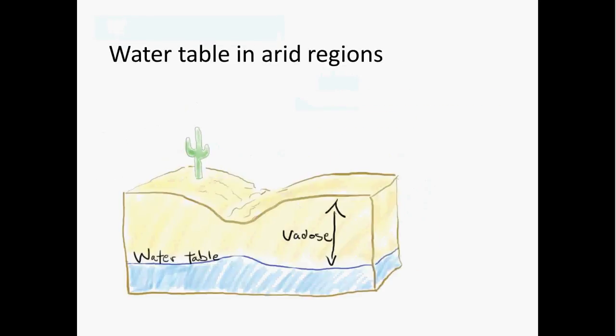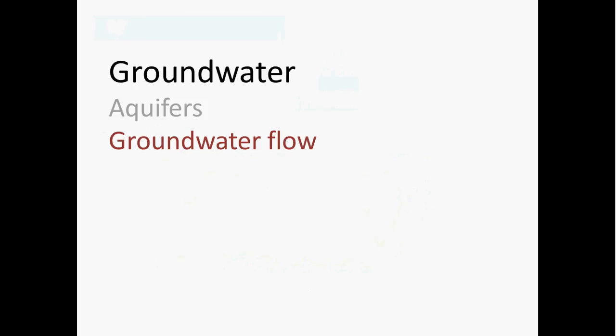In arid regions, precipitation events are not as frequent so the water table tends to be located deeper in the subsurface. There's less water flowing into the saturated zone from precipitation when compared to humid regions. As a result, the vadose zone in arid regions tends to be much thicker than in humid regions. As a result, those water tables typically do not intersect the land surface and help supply water to surface water bodies like streams.